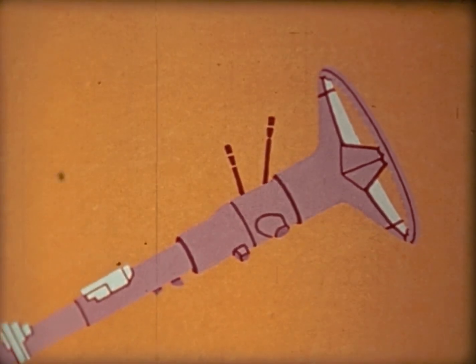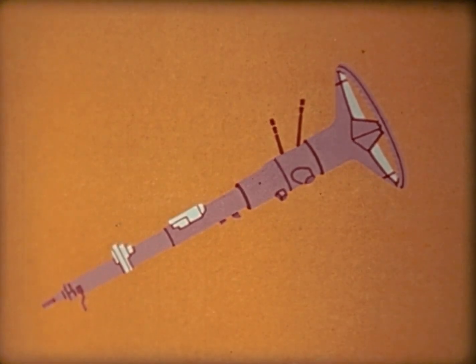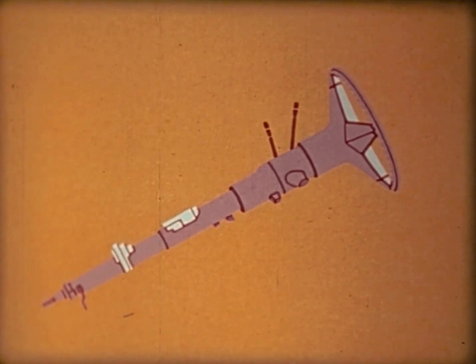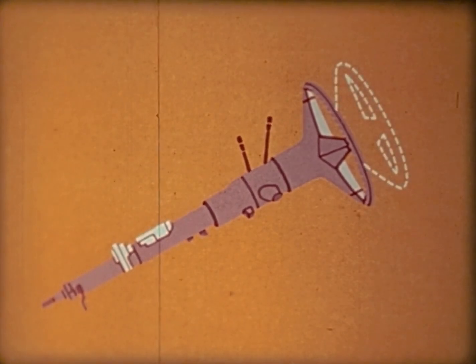Safety steering columns, or posts, were first introduced on GM's 1967 models. These columns are designed to telescope in a collision, greatly lessening the possibility of injury to the driver.